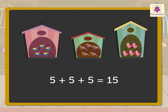Using the multiplication sign, we write it as 3 multiplied by 5 is 15. So, there are 15 birds in all.